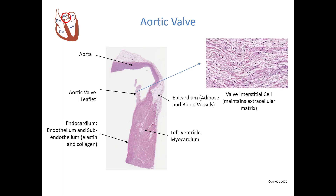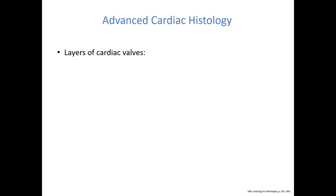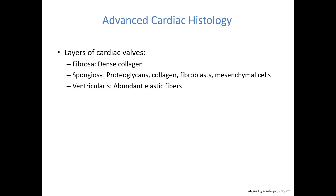The aortic valve also has valve interstitial cells — I've circled one nucleus right here. I want to make one more comment about advanced cardiac histology: if you go into cardiac pathology, you will learn there are also separate layers to the valve itself. The layers of the cardiac valves are the fibrosa, the spongiosa, and the ventricularis. The valves are lined by endocardium.